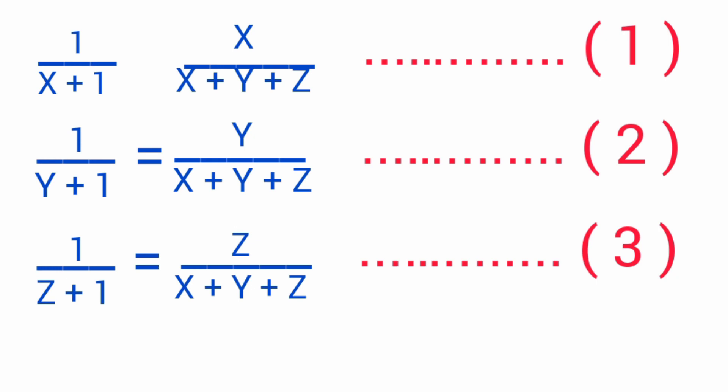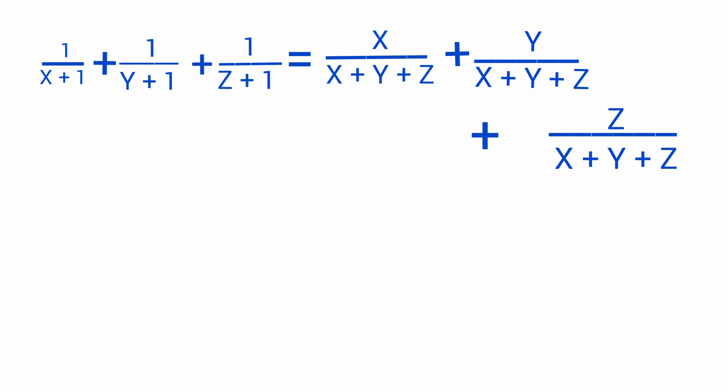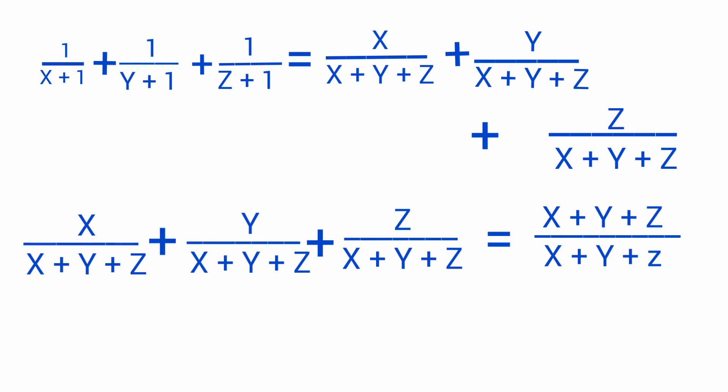Adding equations 1, 2, and 3, we have 1/(x+1) + 1/(y+1) + 1/(z+1) = x/(x+y+z) + y/(x+y+z) + z/(x+y+z). The LCM is (x+y+z), so this equals (x+y+z)/(x+y+z). Both numerator and denominator cancel, giving us the answer: 1.